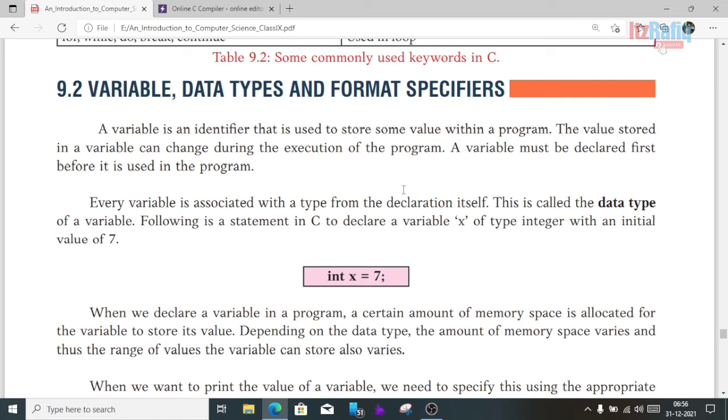Every variable is associated with a type from the declaration itself. This is called the data type of a variable. The following is a C statement to declare a variable x of type integer with value 7: int x = 7. Here int is the data type, x is the variable name, and 7 is the initial value. Initial value means starting value - when the program starts, x has value 7, but the value can change as the program runs.